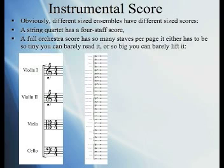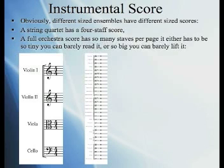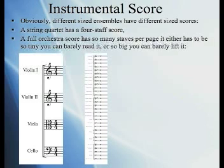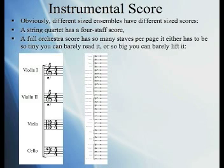Different sized ensembles have different sized scores. The string quartet on the left is a four-staff score — a staff for first violin, second violin, viola, and cello. The full orchestra score on the right has so many staves per page, it either has to be so tiny you can barely read it, or so big you can barely lift it.